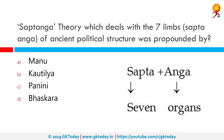Saptanga theory, which deals with the seven limbs or Saptanga of ancient political structure, was propounded by Kautilya. The Saptanga theory of state was given by Kautilya in Arthashastra.